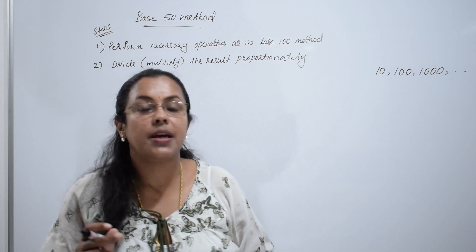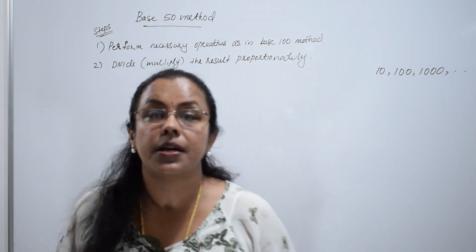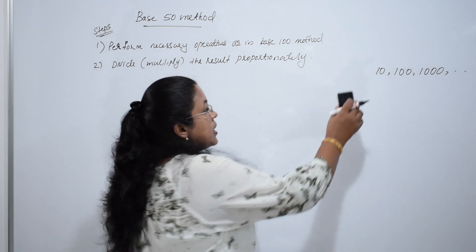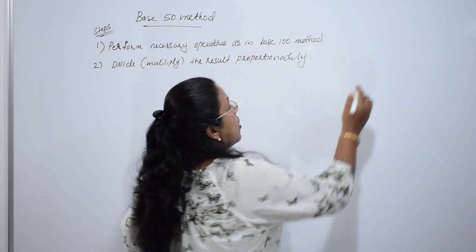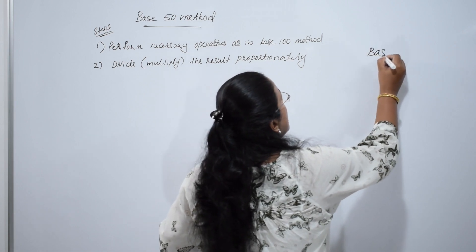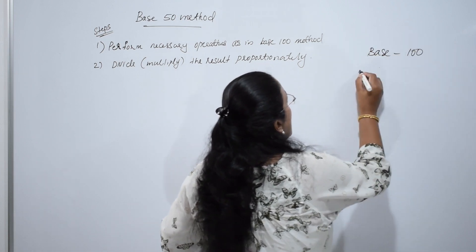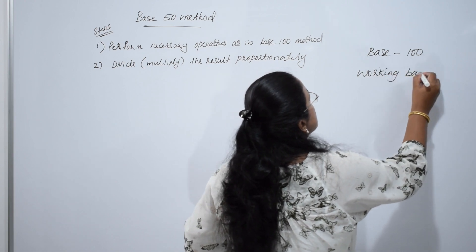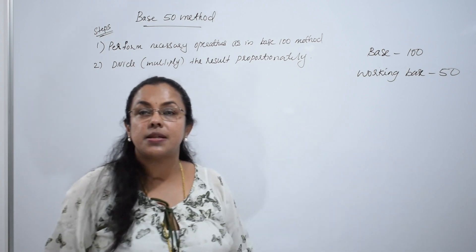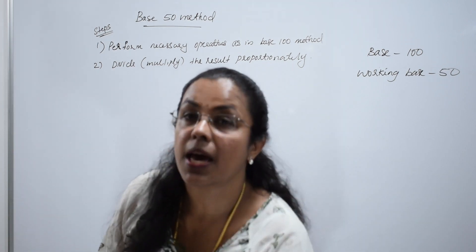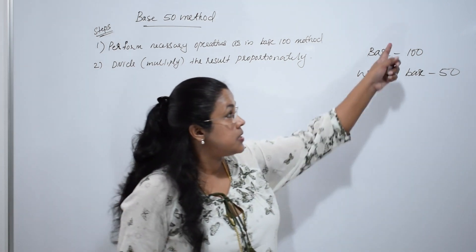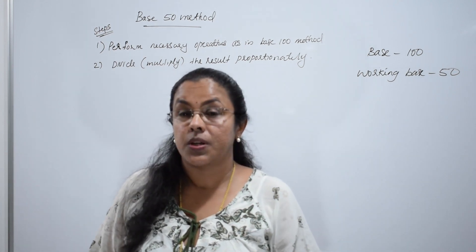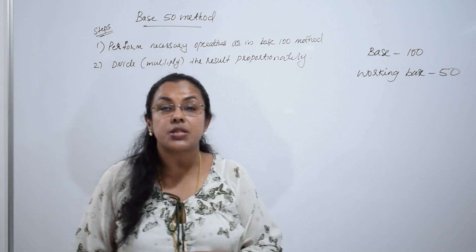We have to take two bases — one is the theoretical base and the other is the working base. Here, I am taking the theoretical base as 100 and the working base as 50. Since there are two bases, there are two steps too.